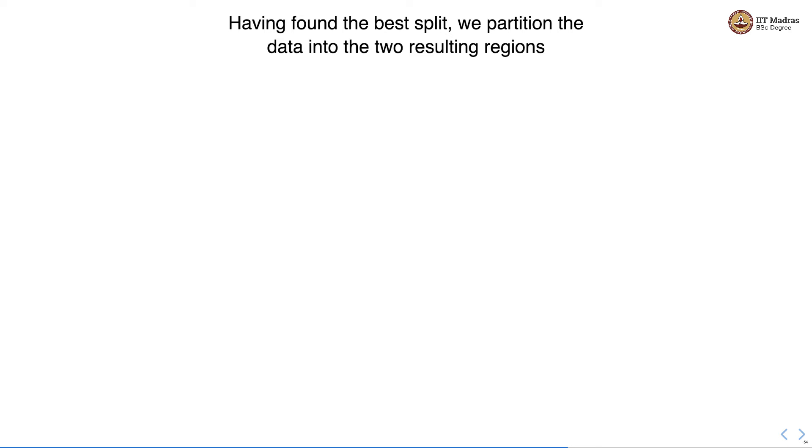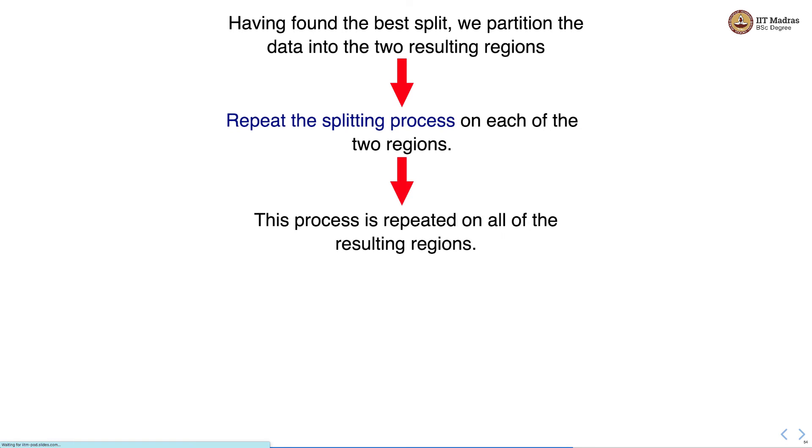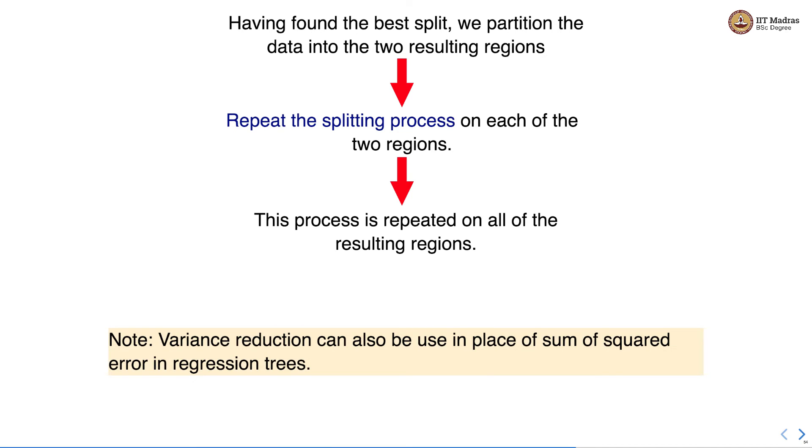Having found the best split we partition the data into two resulting regions. We repeat the splitting process on each of the two regions. This process is repeated on all of the resulting regions and here we can also use variance reduction in place of sum squared errors in case of regression trees.